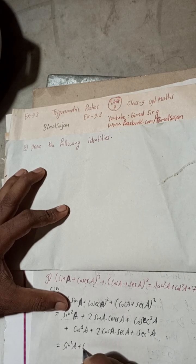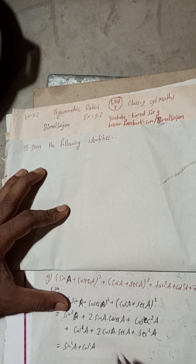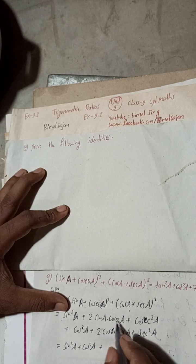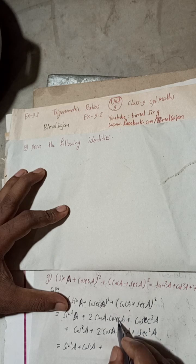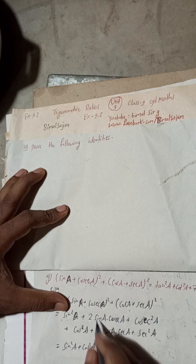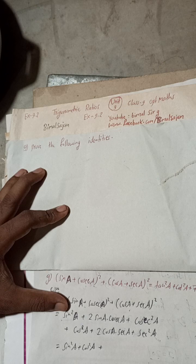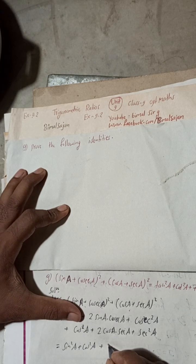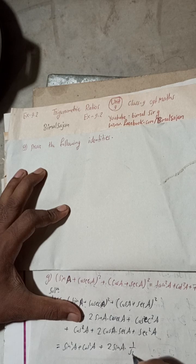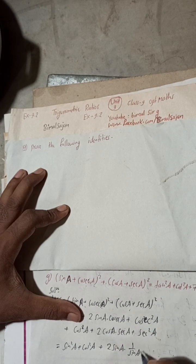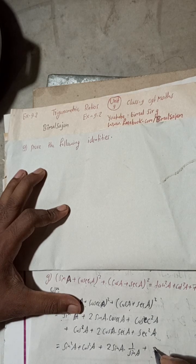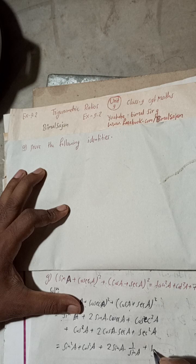Sin² A + cos² A equals 1, placed at one group. And sin A into cosec A: since cosec A equals 1/sin A, these cancel, leaving just 2. So 2 sin A into 1/sin A gives 2. Then cosec² A value is 1 + cot² A.